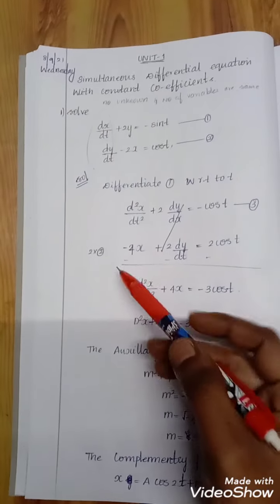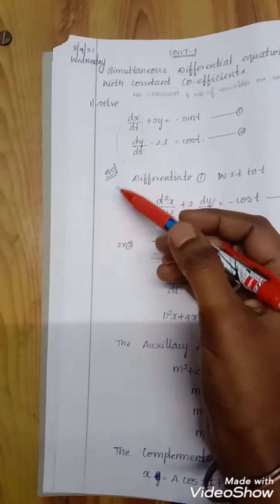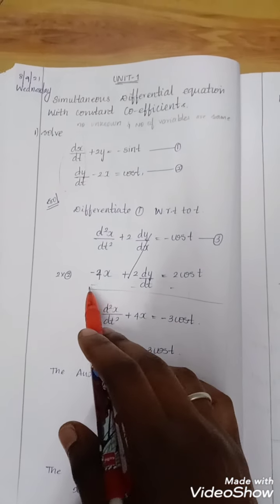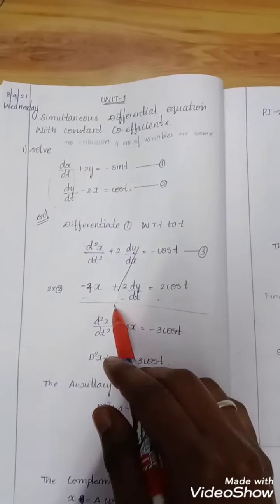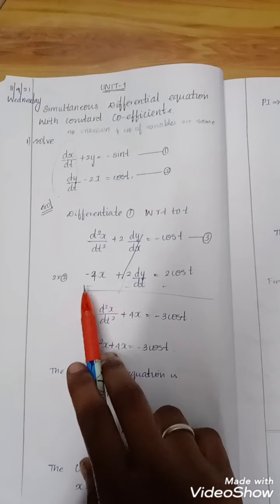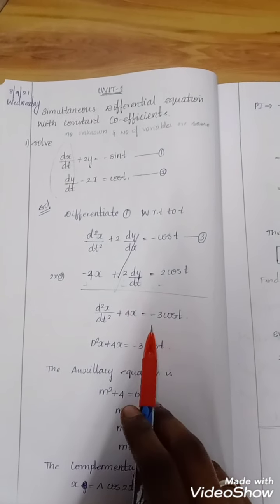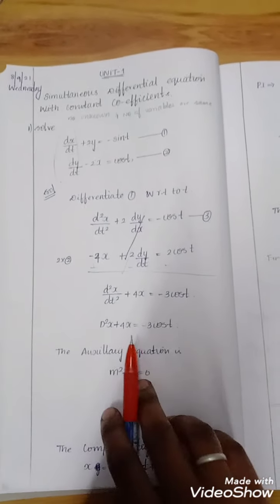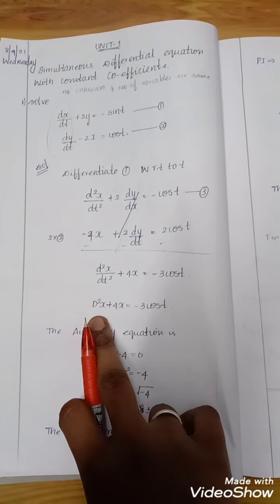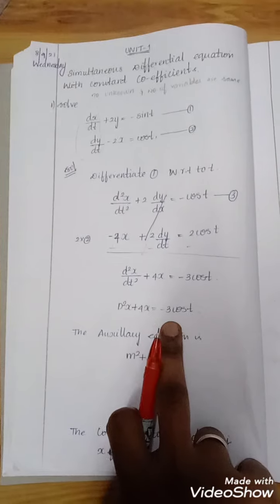From the second equation, we have 2x + dy/dt = cos(t). Substituting and eliminating the common term by taking minus across all terms, we get d²x/dt² + 4x = -3cos(t). This can be written in standard form as (D² + 4)x = -3cos(t).